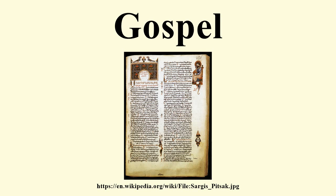In 170, Tatian sought to find a solution by composing a single narrative out of Matthew, Mark, and Luke, with some additional oral material. The gospel passages themselves can be unclear, and some of the messages within are straightforwardly ambiguous and intended to be metaphorical or poetic.